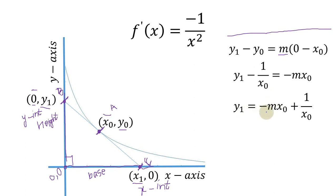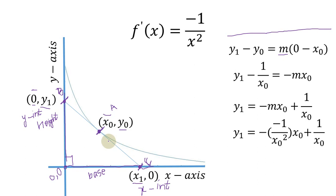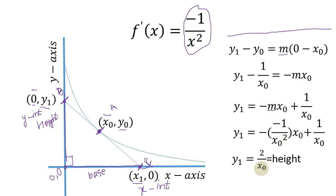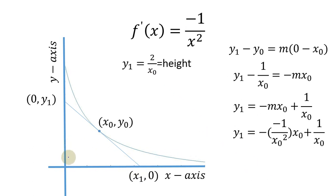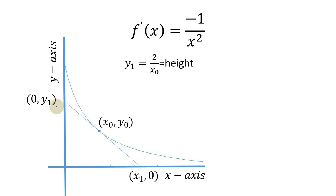We rearrange and substitute m = −1/x₀² into the equation: y1 = −(−1/x₀²)·x₀ + 1/x₀, which simplifies to y1 = 1/x₀ + 1/x₀ = 2/x₀. So the value of y1 is 2/x₀, which is the height of this right-angle triangle.